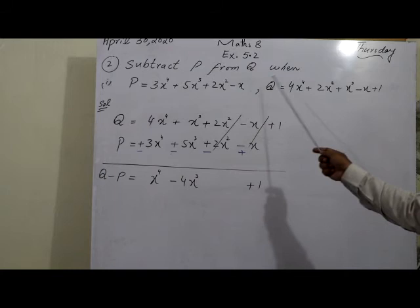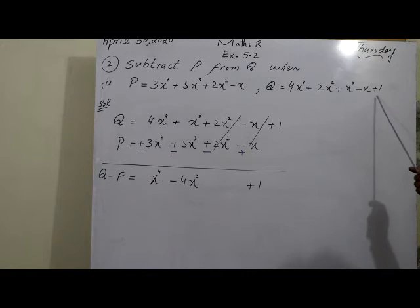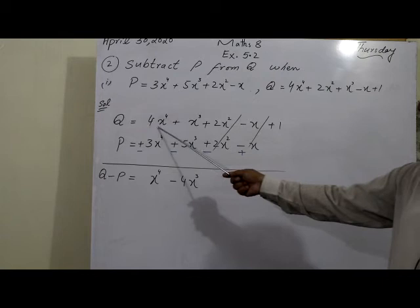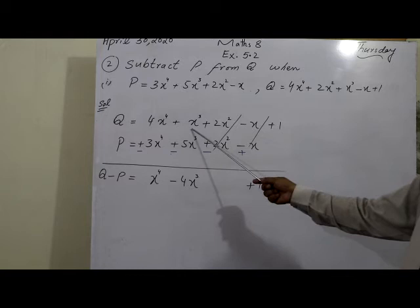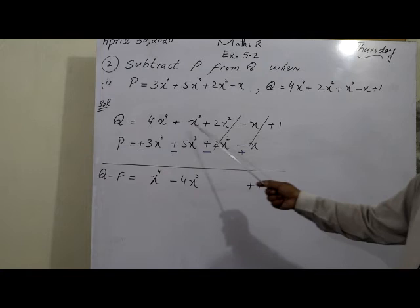Question 2: Subtract p from q. Expression p is 3x⁴ + 5x³; expression q is 4x⁴ + 2x² + x - 1; subtract p from q means q minus p. When subtracting, the expression being subtracted is written below. We write q first, rearranged in descending order: 4x⁴ + x³ + 2x² - x + 1; then p below it in matching powers.